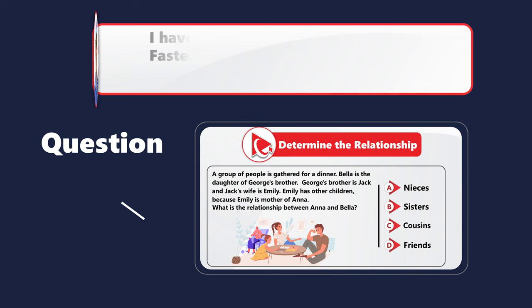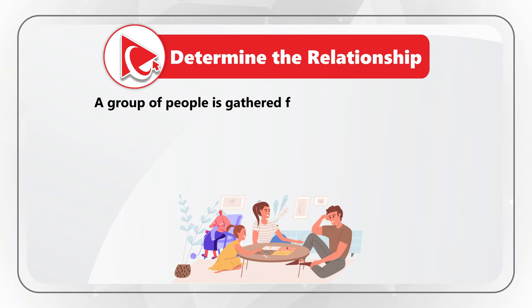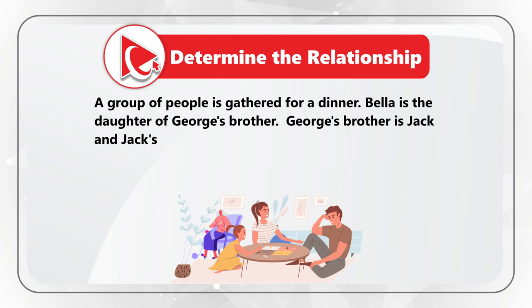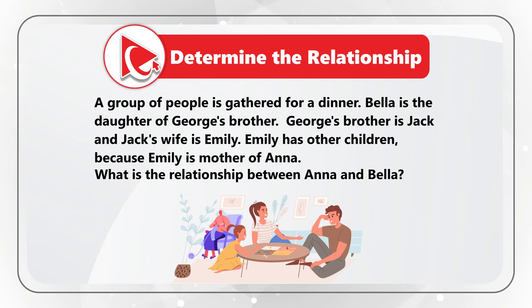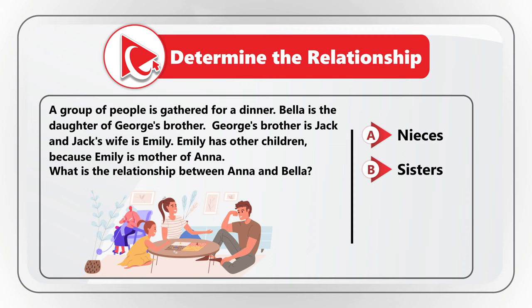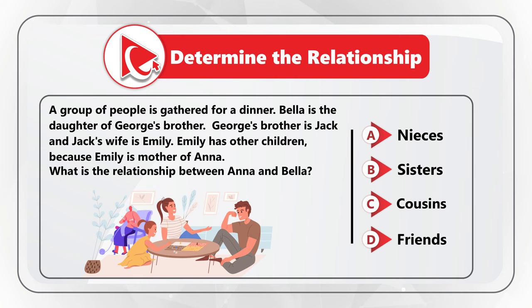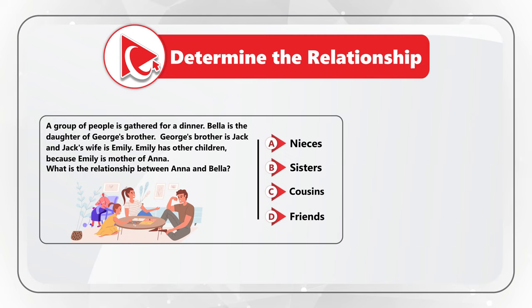Here is a practice question for you. You need to determine the relationship between Anna and Bella. A group of people is gathered for a dinner. Bella is the daughter of George's brother. George's brother is Jack, and Jack's wife is Emily. Emily has other children because Emily is the mother of Anna. So what is the relationship between Anna and Bella? Choices: A — they are nieces; B — they are sisters; C — they are cousins; D — they are just friends. Please pause this video, solve it, and post your answer in comments so I can give you feedback.